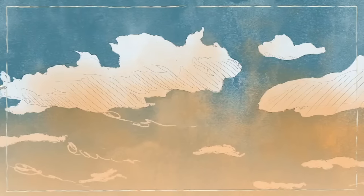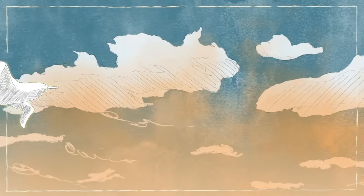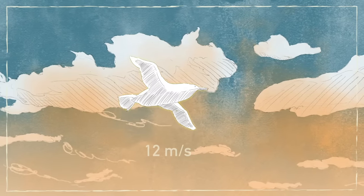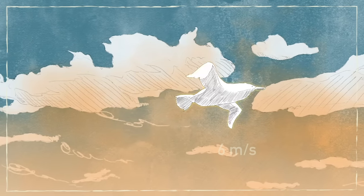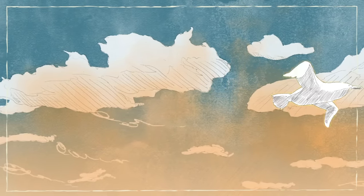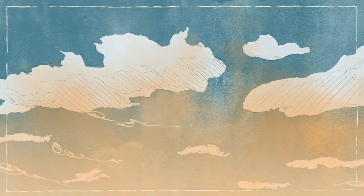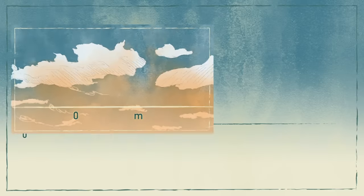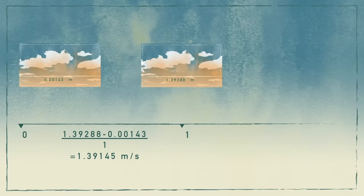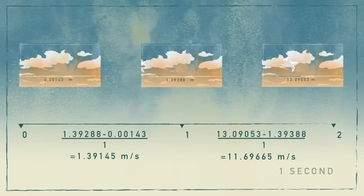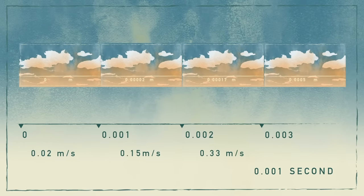Perhaps we can chop the motion up according to its speed, like fast periods and slow periods. But it's perhaps still not precise enough. How about dividing it into smaller chunks — like tracking the change in distance every second, millisecond, nanosecond, or even zero seconds?